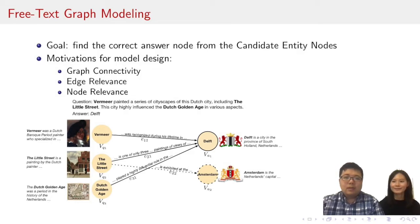What else? A correct entity node would connect to question entities with an edge sentence that is close to the question sentence. For example, in the figure, the question entity node, the Little Street, connects to both candidate entity nodes, Delft and Amsterdam. But the edge with the sentence, the Little Street is one of the only three paintings of View of Delft, is more similar to the question than, the Little Street is exhibited in Amsterdam. So the model needs to prioritize evidence edges that are similar to the question. Okay, the second criteria is edge relevance. Evidence edges with sentences that are similar to the question are likely to be more helpful.